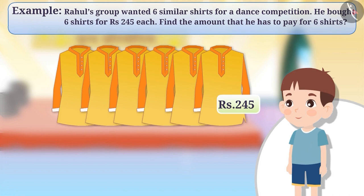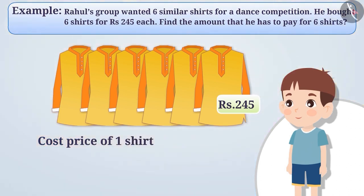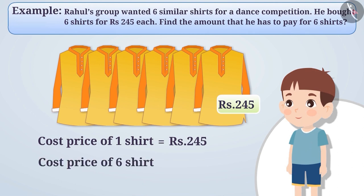Here, we have to find the amount Rahul has to pay for six shirts. We are given the cost price of one shirt, that is, rupees 245. In order to find the cost of six shirts, we have to multiply the number of shirts — that is six — with the cost of one shirt, rupees 245. Therefore, cost of six shirts is equal to rupees 245 into 6, which is equal to rupees 1470.